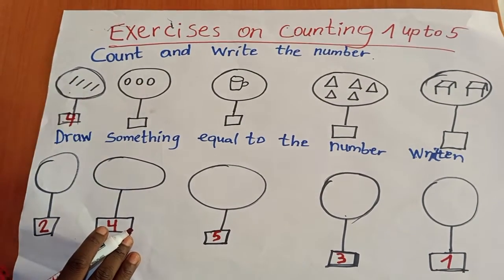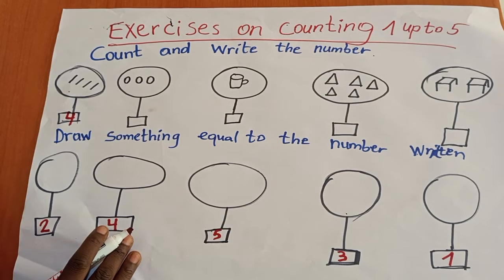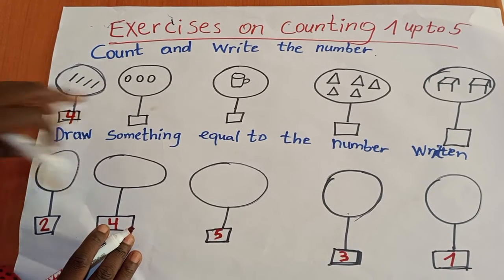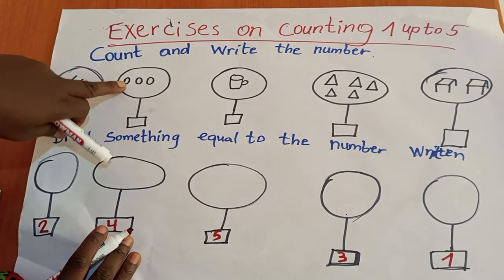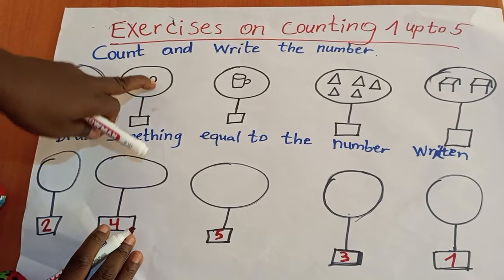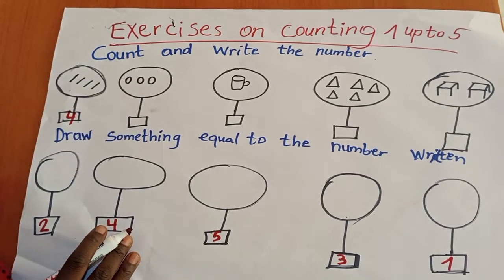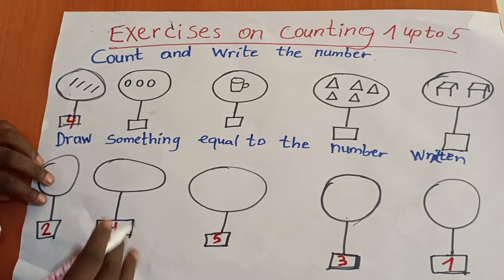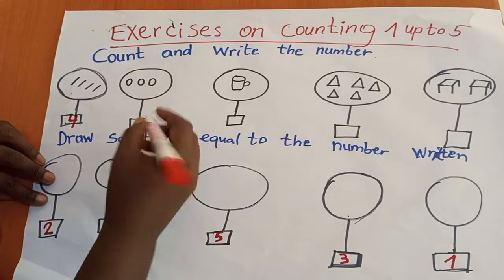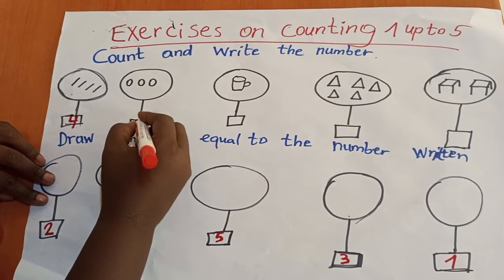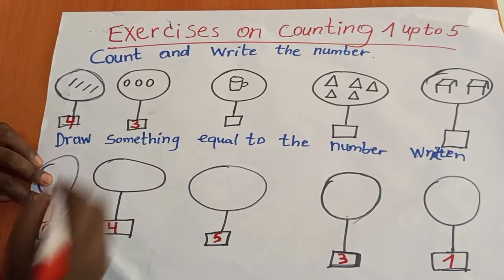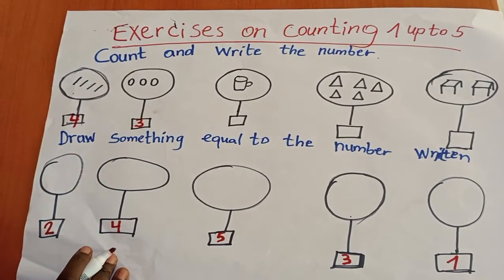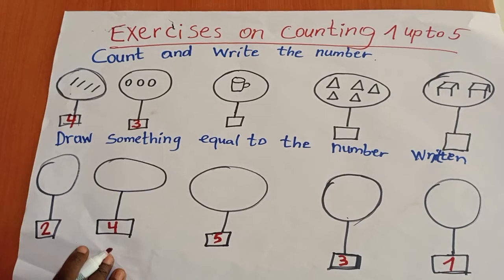Here we have closed lines. I am going to count them. One, two, three. Here I am going to write the number three, because here there are three closed lines.